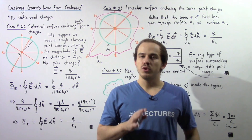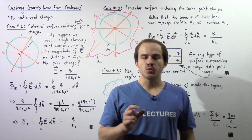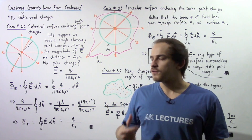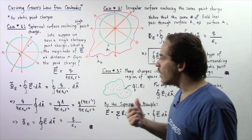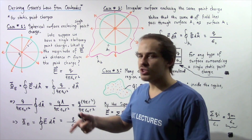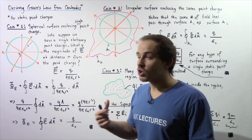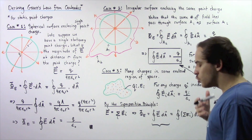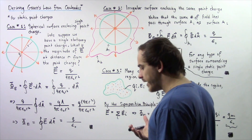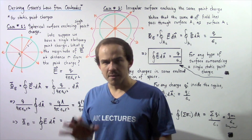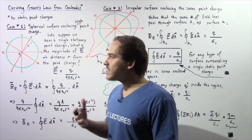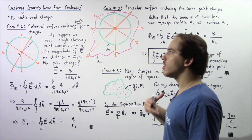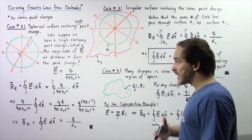In the previous lecture, we were able to derive Coulomb's equation from Gauss's law. Now we're going to do the opposite — we're going to derive Gauss's law from Coulomb's equation. We're going to make the assumption that our electric charges are static point charges.